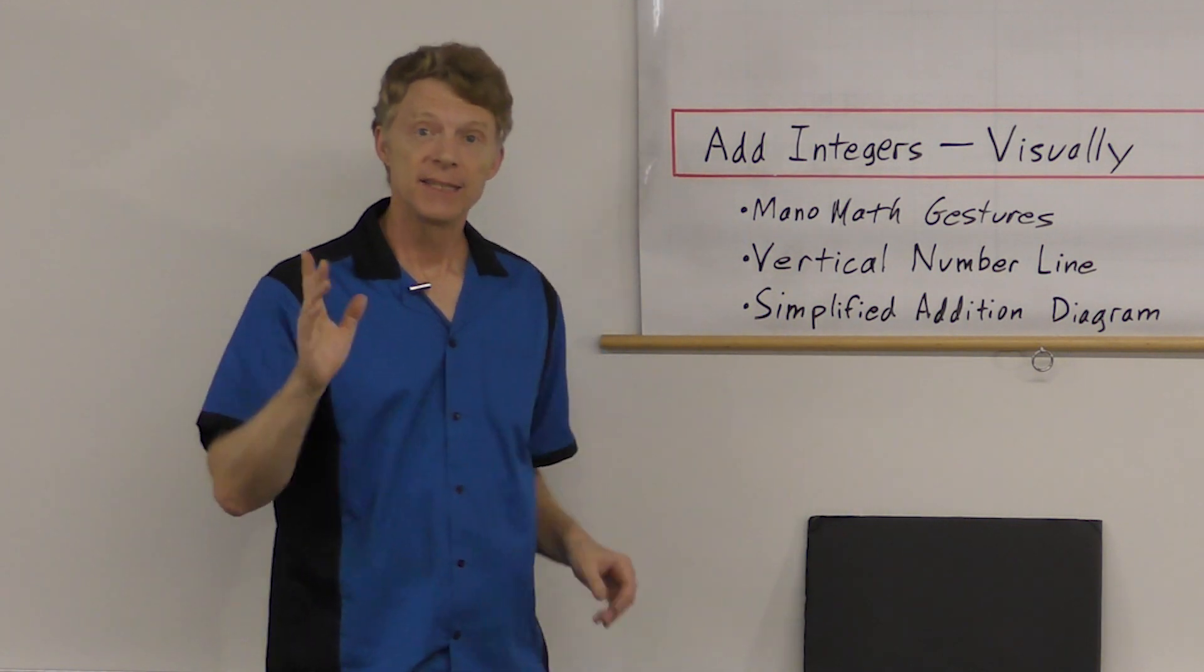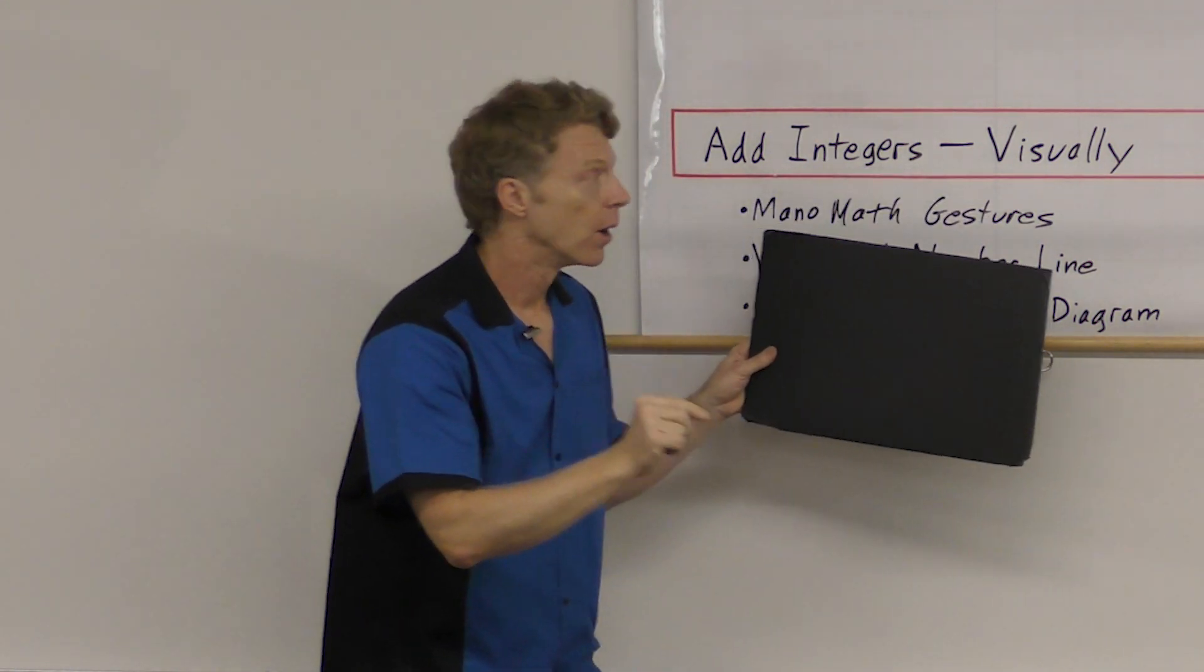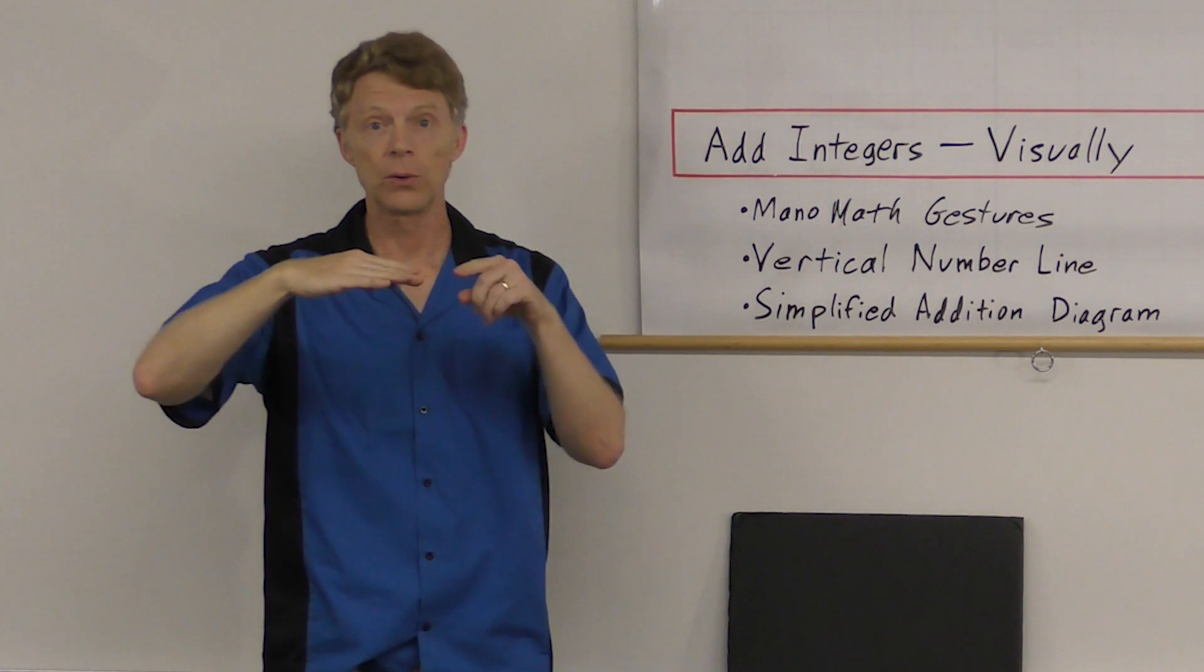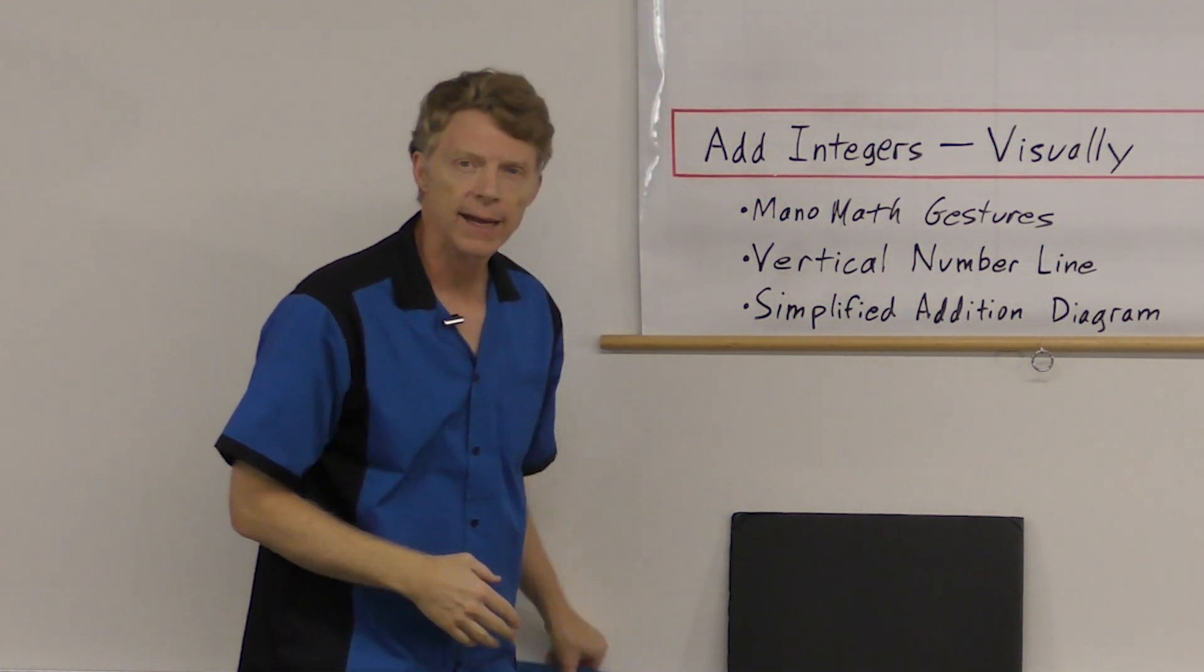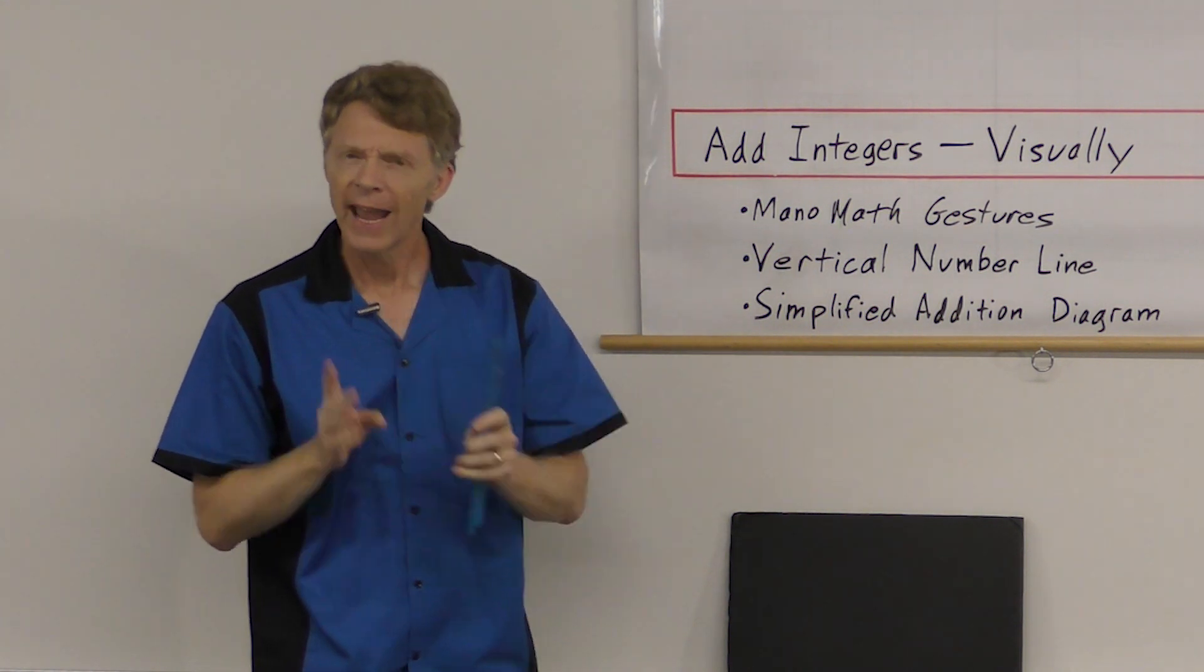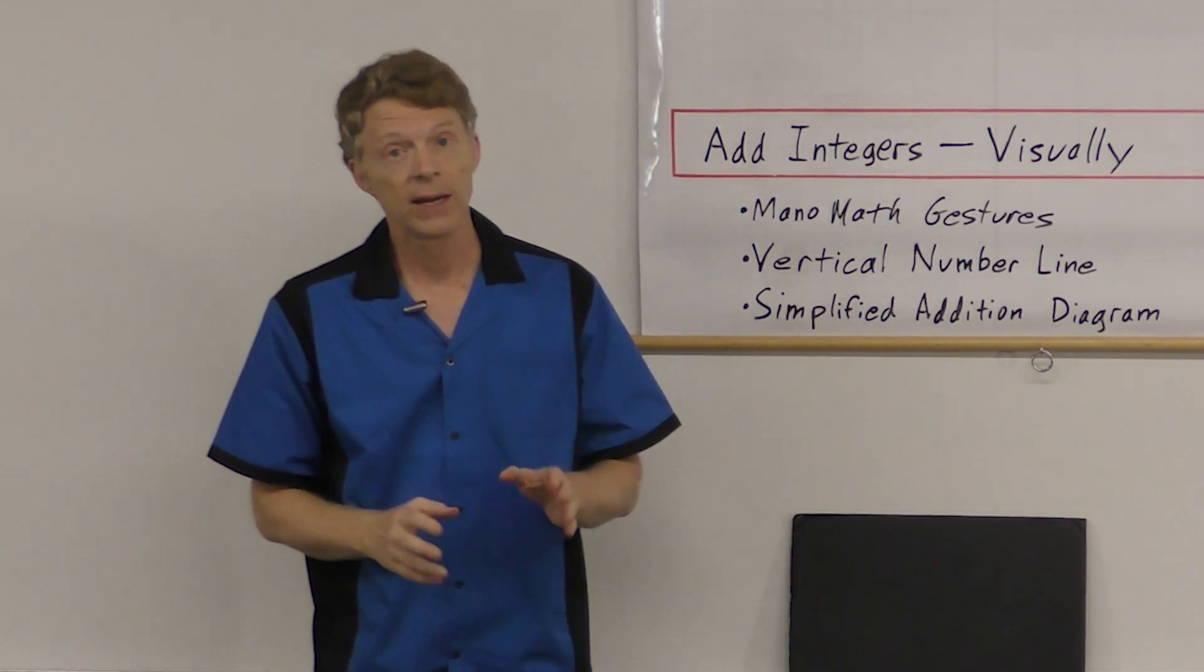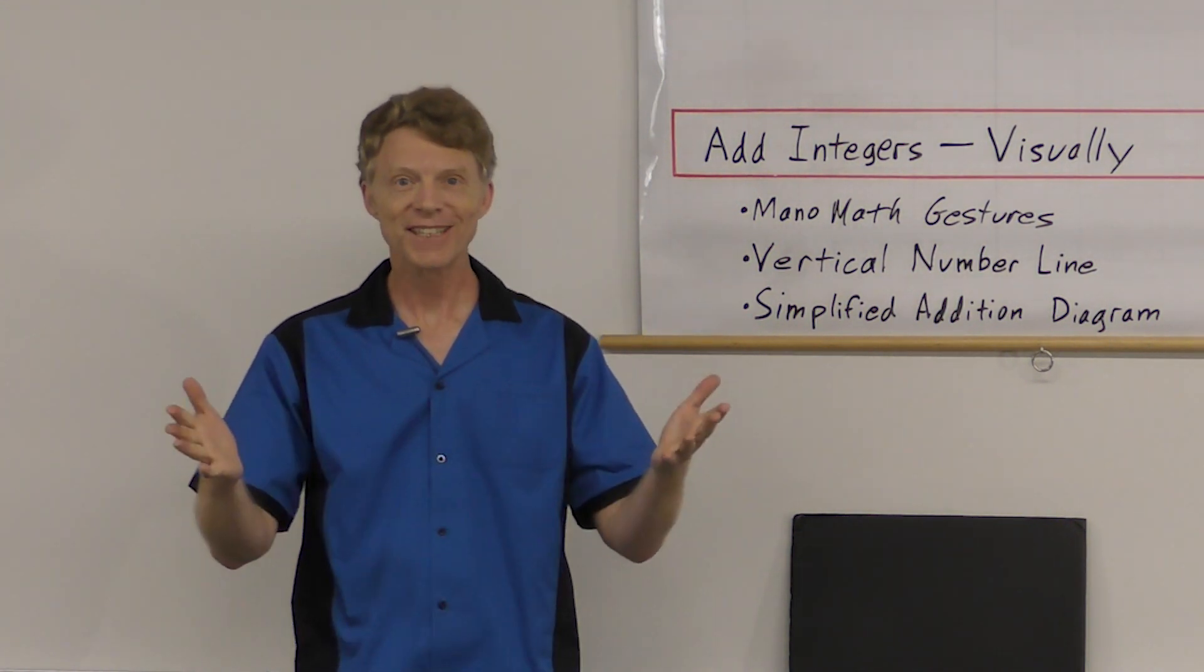Hello. Today we are going to add integers, but we're going to do it visually. First, we're going to use some really cool monomath gestures. Then we're going to take our horizontal number lines and turn them vertical. And finally, we're going to simplify those in something I call an addition diagram that I think you're going to find is really easy and extremely helpful. So let's get started.